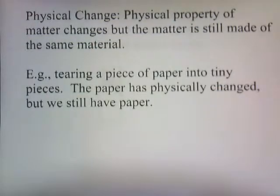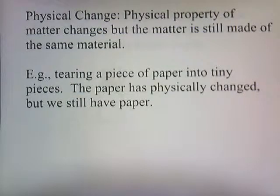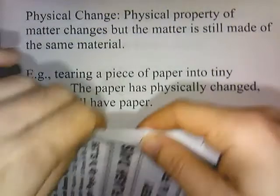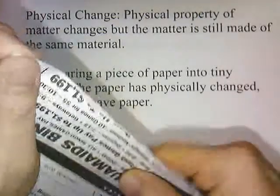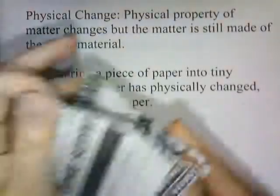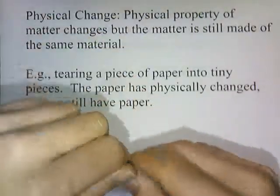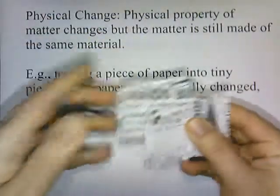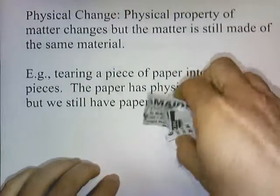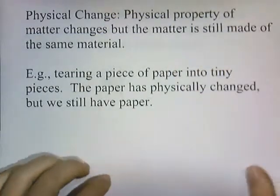What's a physical change? A physical change is when a physical property of the matter changes, but the matter is still made of the same material. For example, tearing a piece of paper into tiny pieces — the paper has physically changed, but we still have paper. So that's a physical change.